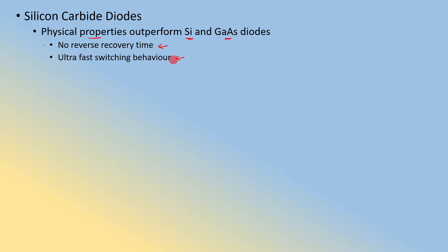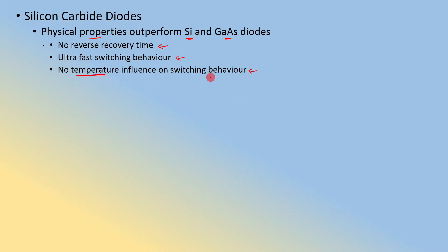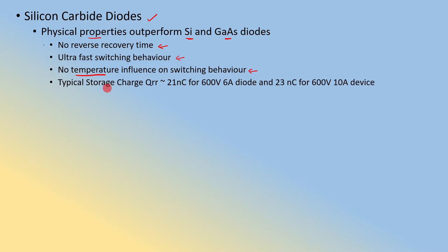Because silicon carbide diodes have virtually zero reverse recovery time, you can turn on and off very rapidly. Another very important property is that they don't have any temperature influence on their switching behavior — temperature does not affect the switching. Looking at typical stored charge (QRR), it is roughly 21 nanocoulombs for a 600V, 6A diode and 23 nanocoulombs for a 600V, 10A diode — not much difference.